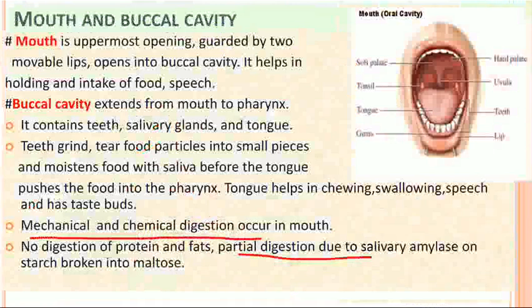The palate is the roof of the buccal cavity. The hard palate is in front, which is a bony structure, and the soft palate is muscular and is at the back. The tongue helps in chewing, swallowing, and speech, and has taste buds to taste the food. Teeth help in grinding and tearing food particles into small pieces and moistening the food with saliva. These all constitute mechanical digestion in the mouth. For chemical digestion, the buccal cavity has three pairs of salivary glands which secrete saliva containing an enzyme called salivary amylase. Salivary amylase splits starch into glycogen and maltose, so carbohydrate digestion begins in the buccal cavity itself.